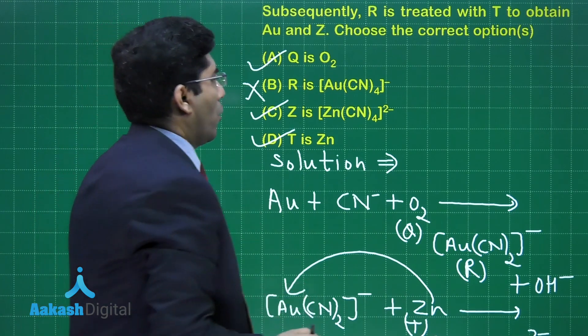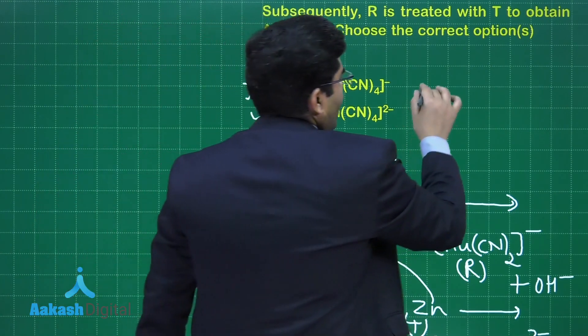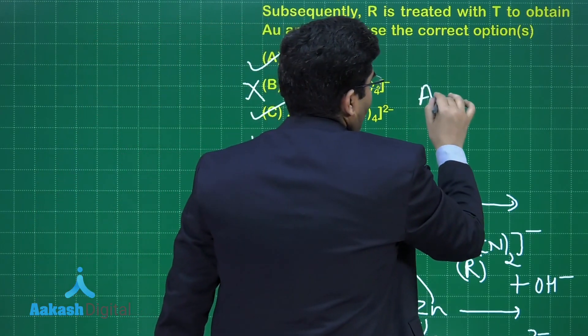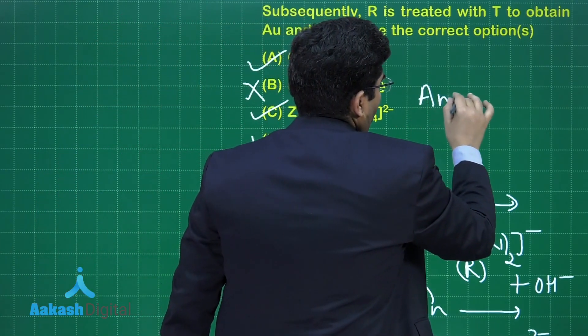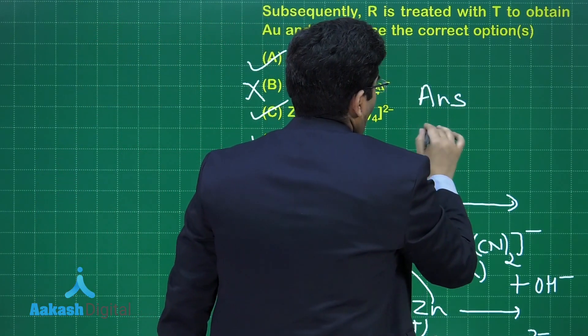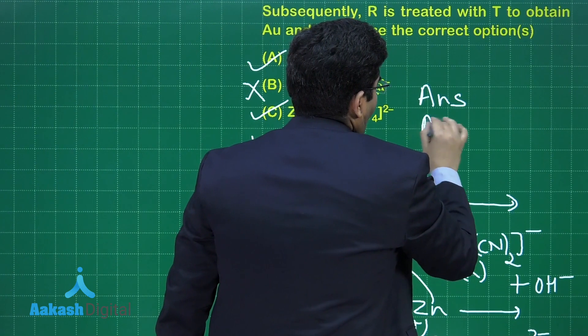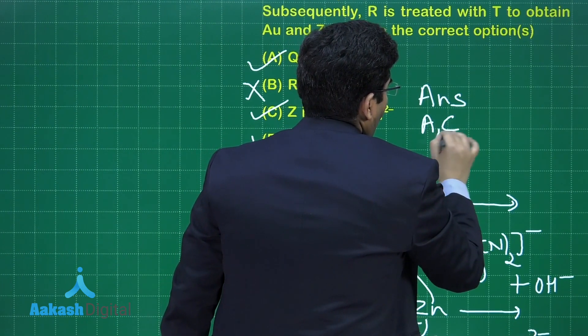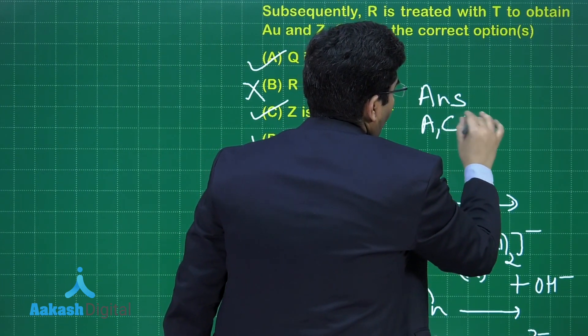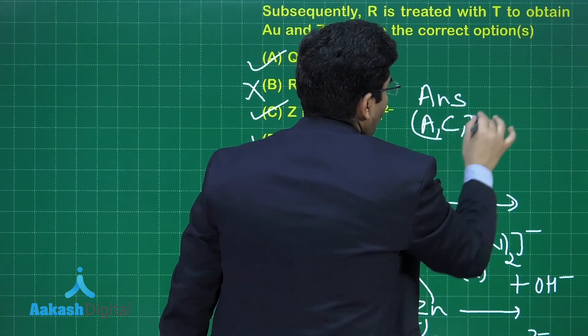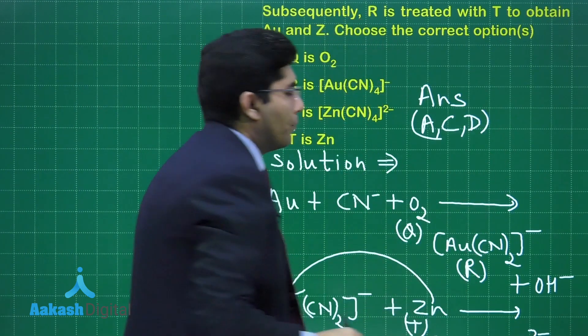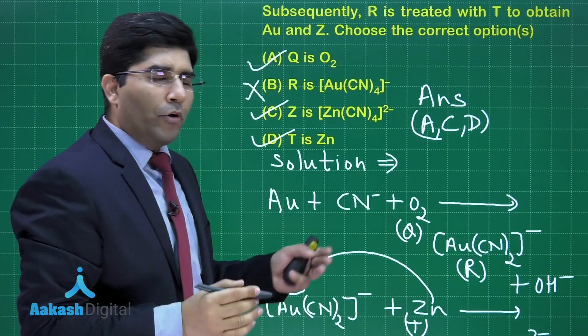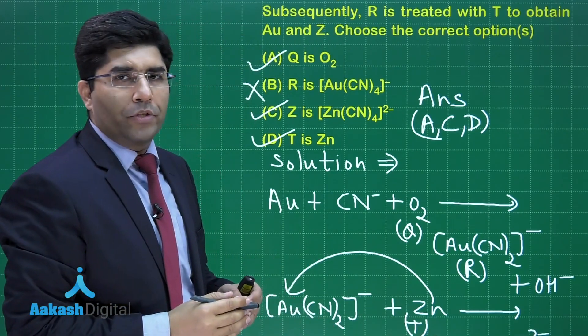So the correct answer for question 3 is options (A), (C), and (D). Option (B) is wrong. Let's move on to the next question.